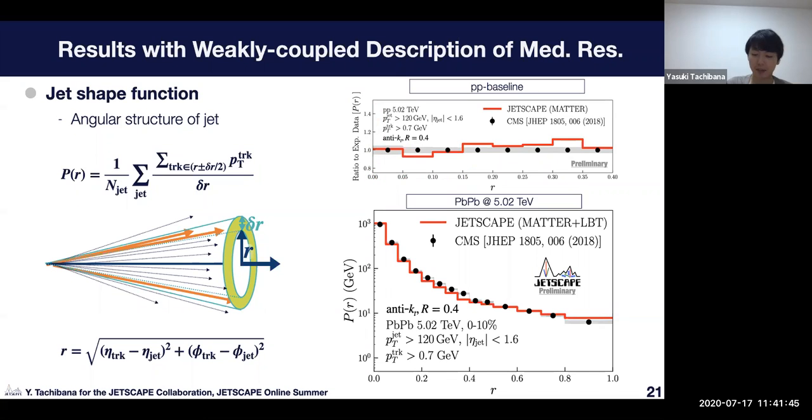The bottom panel is the result for the simulation with medium effect with recoil. We can see a very broad shape measured by CMS and our result describes the data very well. In particular at large angle region, recoil effect is very significant.